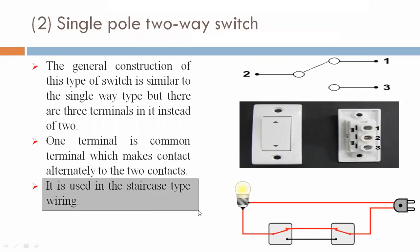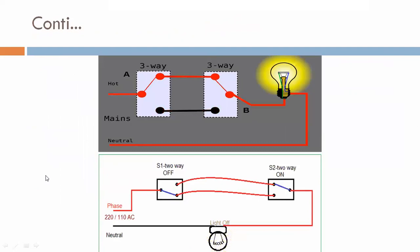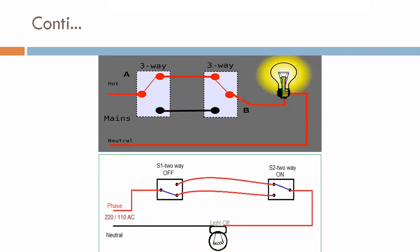The single pole two-way switch is used in staircase-type wiring. As seen in the third figure, by switching up and down from either end of the staircase, the bulb will glow. The switch can be operated in both up and down positions.